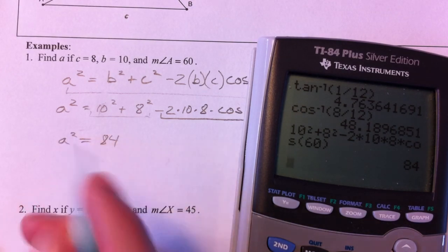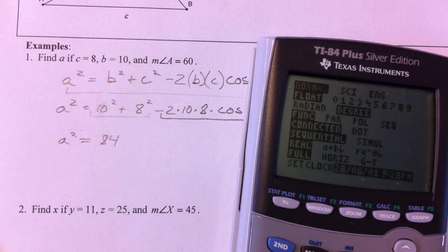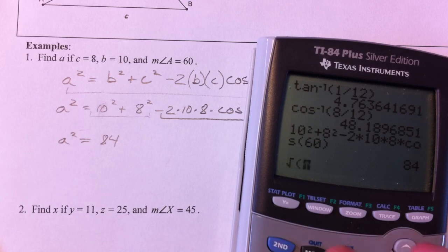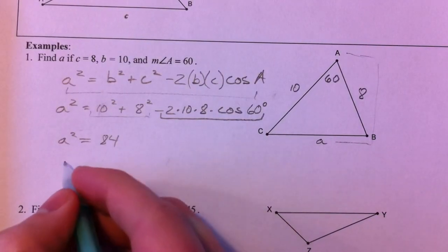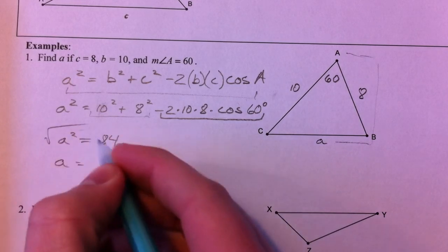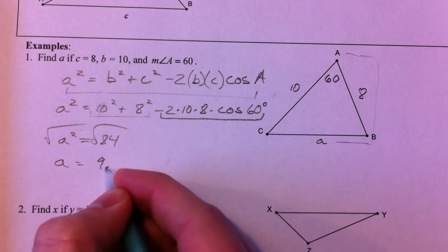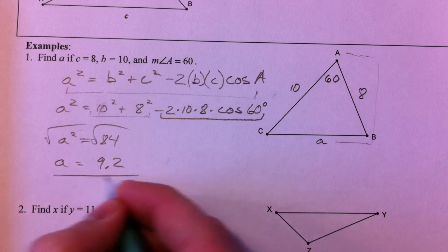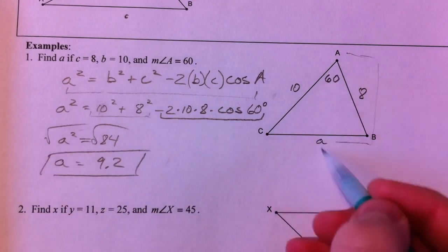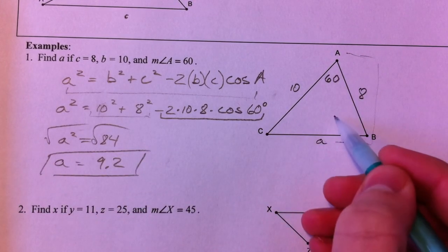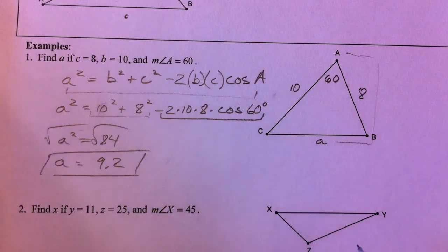That's a². Notice that you have to be in degree mode in order to get that. And then take the square root of your answer, and you get 9.2. And that's your answer. It's across from 60, looks like it fits into your 10 and your 8 just fine.